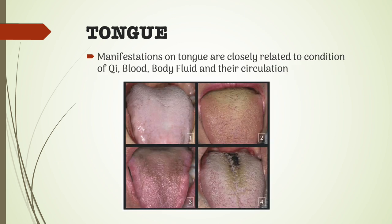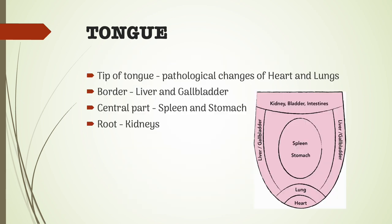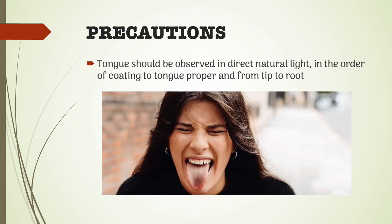The manifestations of the tongue are closely related to the condition of qi, blood, body fluid, and their circulation. The tip of the tongue reveals the pathological changes of the heart and lungs. Its border reveals those of the liver and gallbladder. Its central part reveals those of the spleen and stomach. And its root reveals those of the kidneys. The tongue should be observed in direct natural light in the order of coating to the tongue proper and from tip to root.